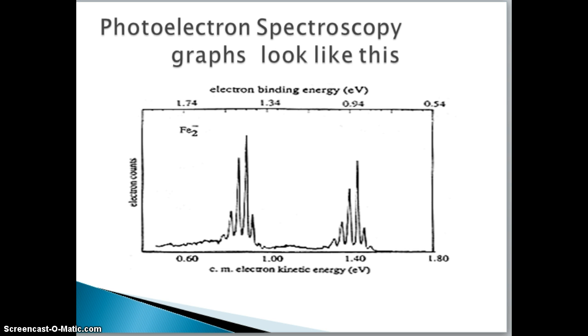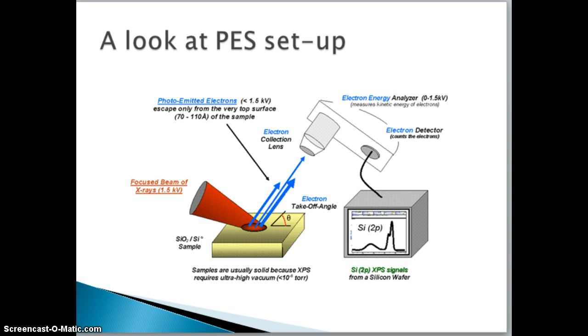The setup that we have for photoelectron spectroscopy looks like the setup for photoelectric effect. You have a beam of rays, in this case they're shown as red, and the focused beam is x-rays in this case, hits some kind of sample.